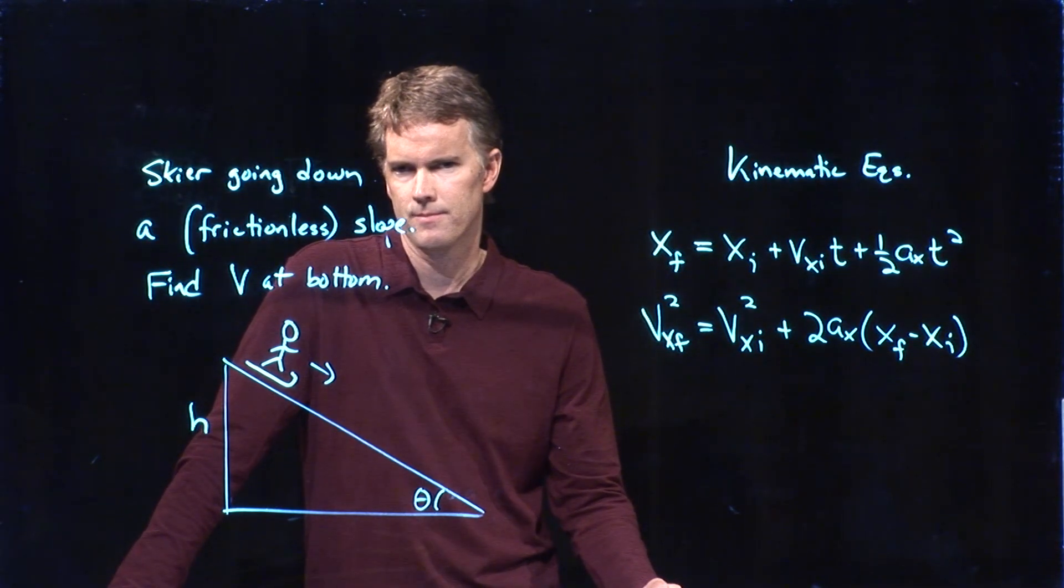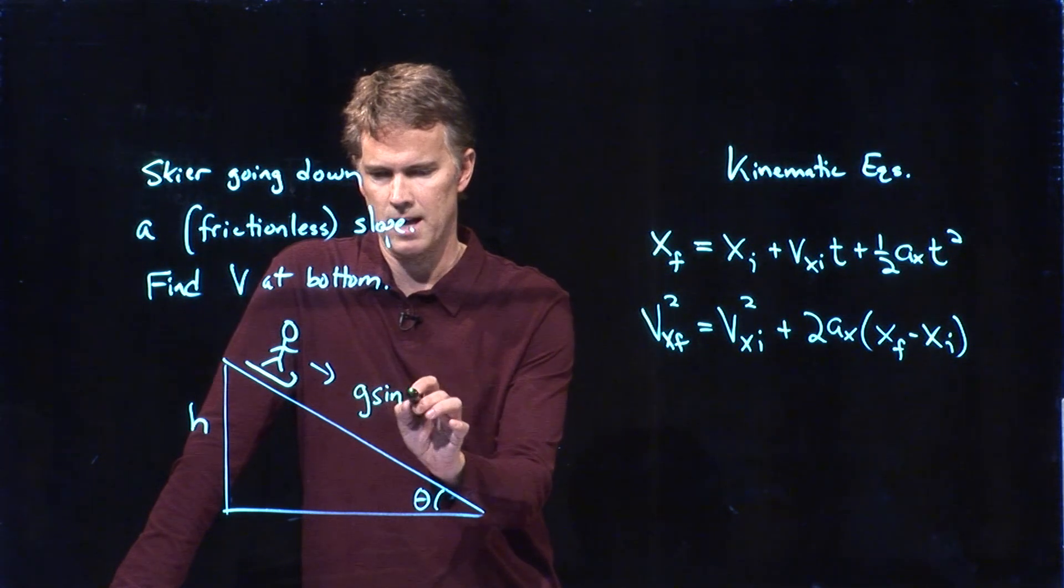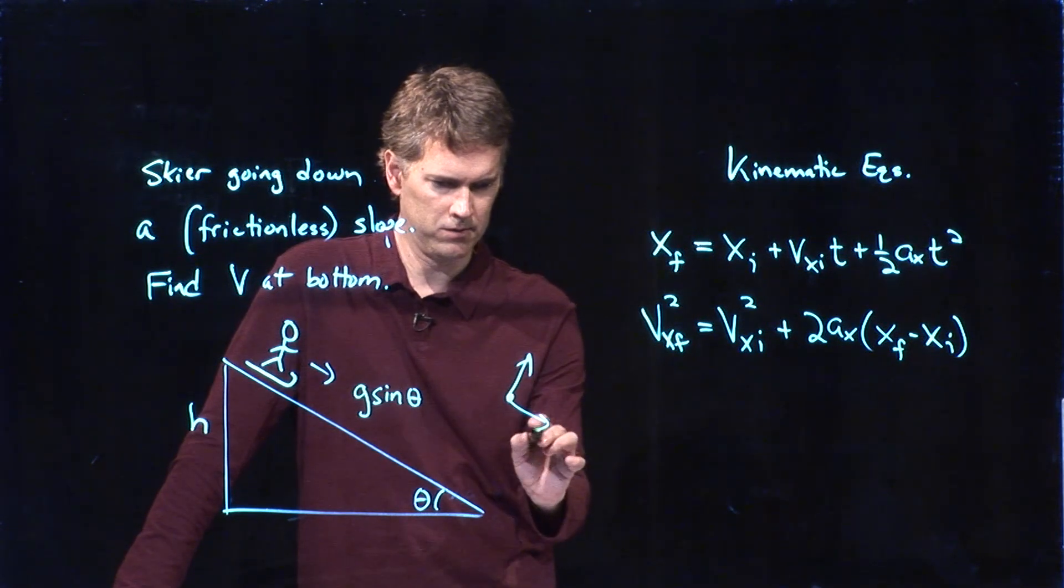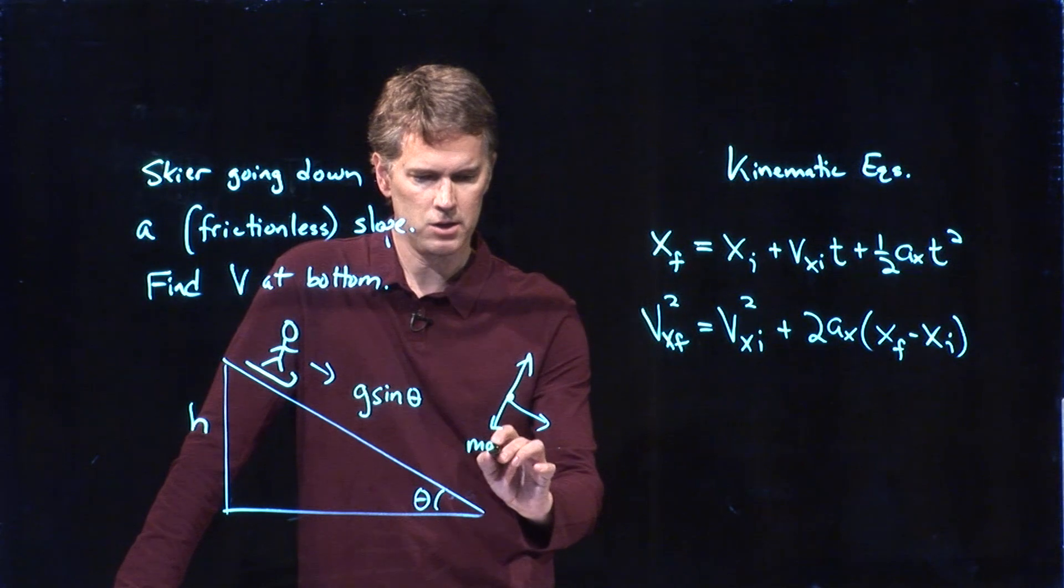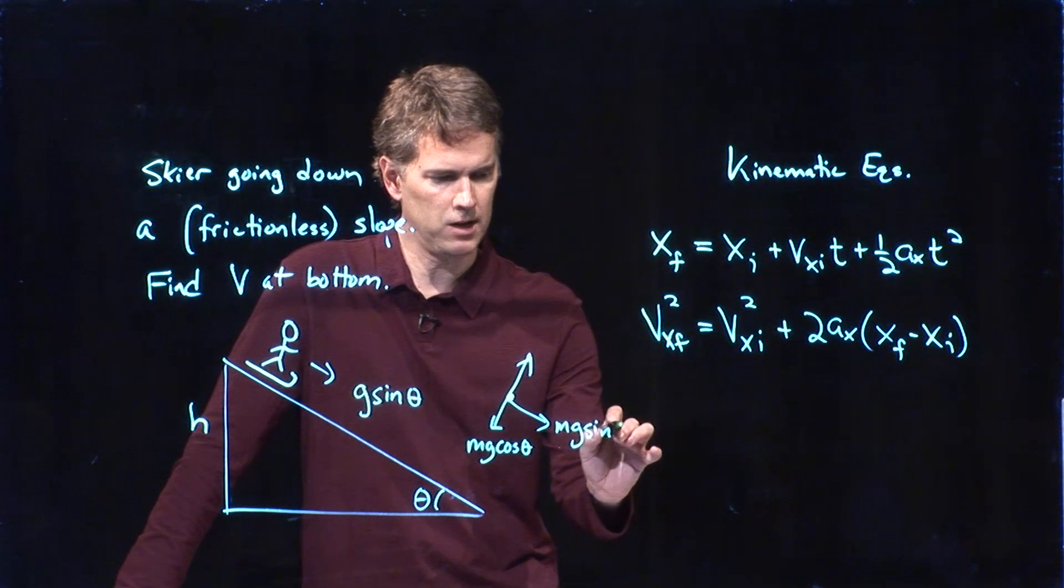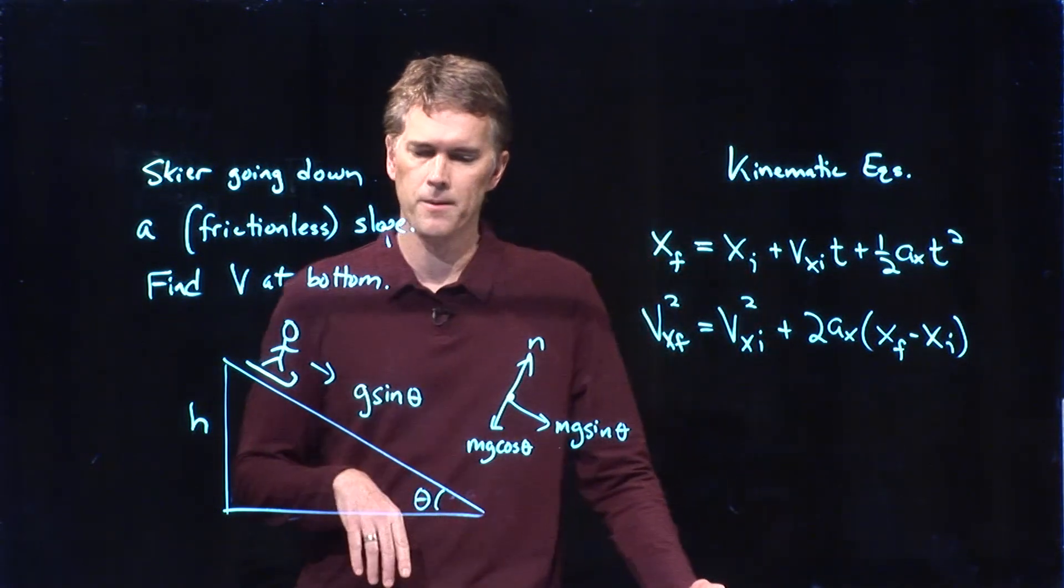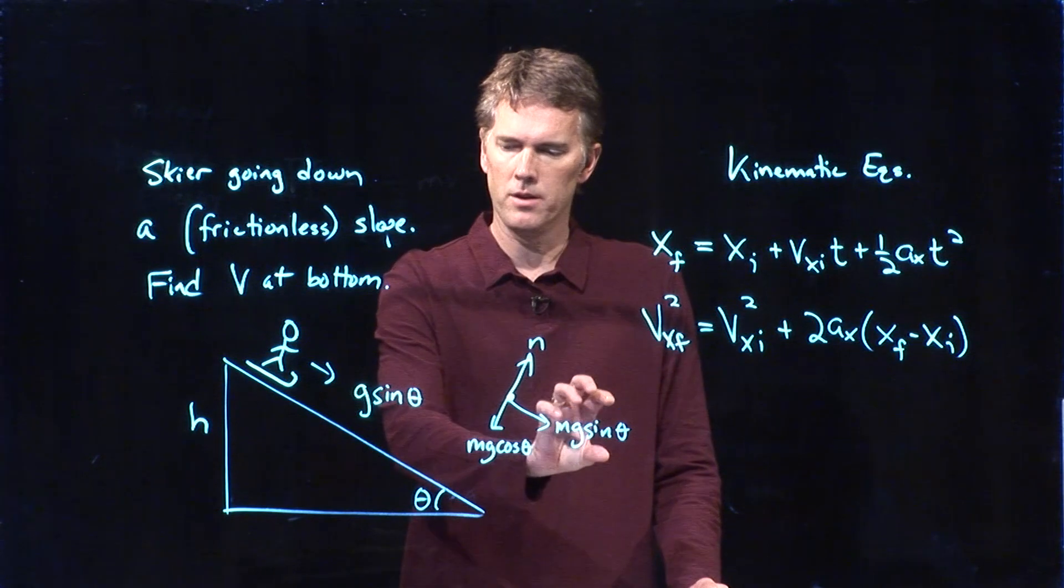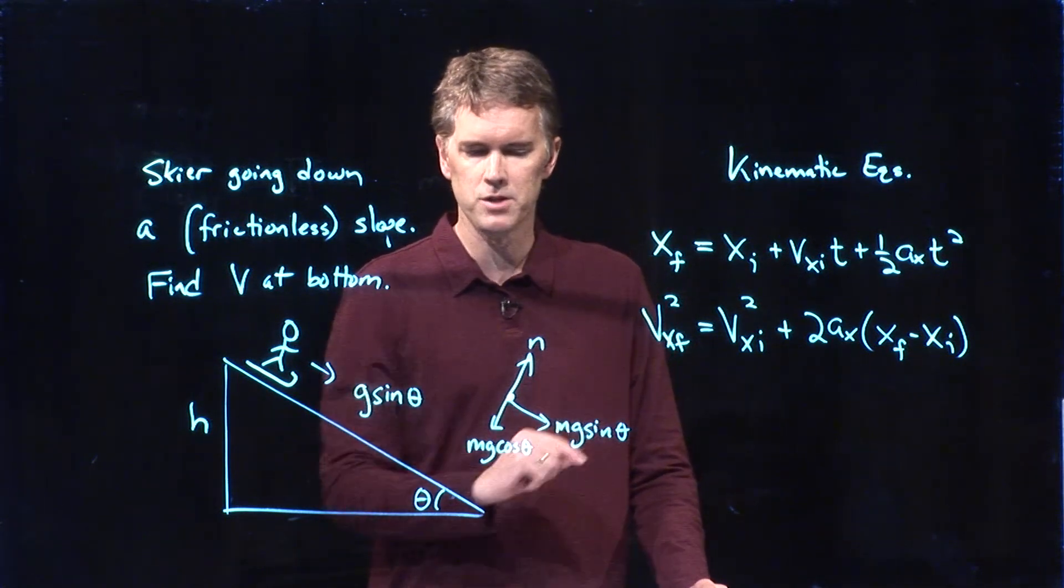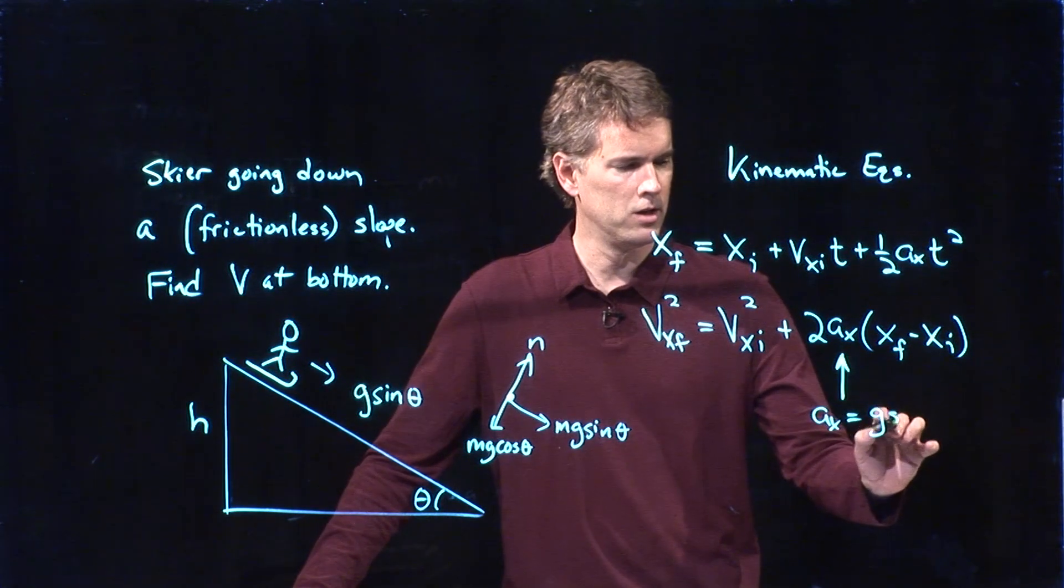Should be mg cosine theta. Okay. Very close. Except I think we want a sine theta. Right? If I think about the force diagram like this, then I break mg into components, and it turns out cosine theta ends up in that direction. Sine theta ends up in that direction. That is, of course, our normal force. And if there's no friction, then there's no force going back up that way. So the acceleration down the x direction is going to be g sine theta. The force down the x direction is mg sine theta. Okay. So in this case, we've got this. A sub x equals g sine theta.